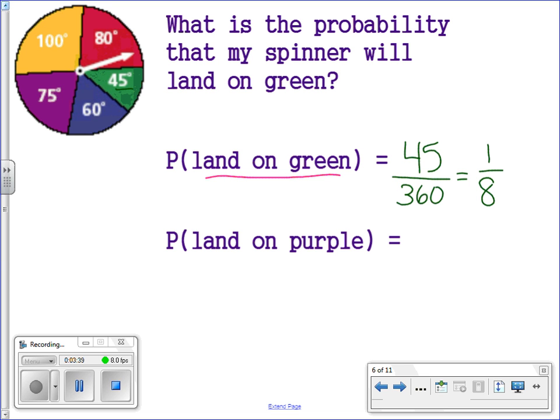Now let's look at the probability that it will land on purple. Well, if we look at purple, we see the degree is 75. So 75 divided by 360. That is your answer. You don't have to simplify it, but if you'd like to, this does simplify to 5 over 24. So either of those, I would accept.